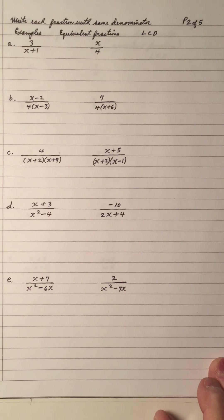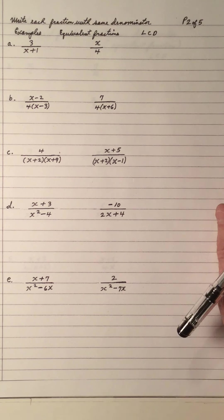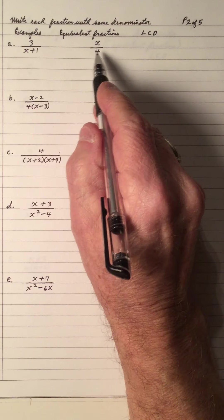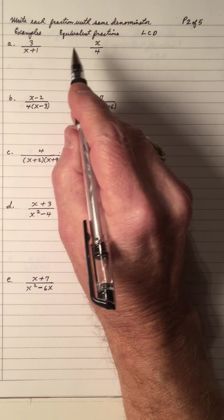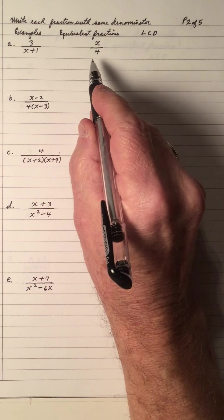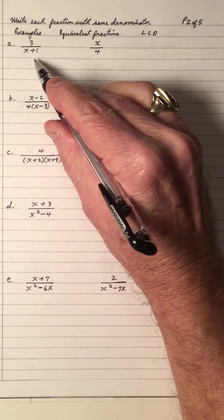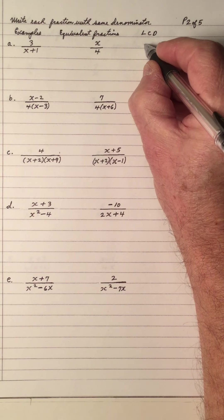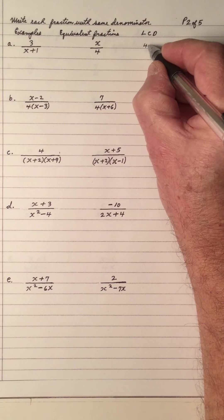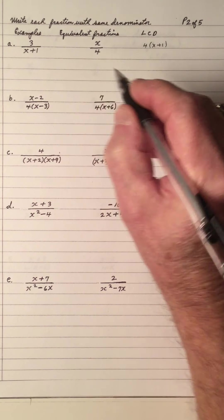Write each fraction with the same denominator. To do that, if I need the same denominator for both fractions to have equivalent fractions, I have to find the LCD. The LCD is x plus 1 and 4, so the LCD is 4 times x plus 1, because you need each of these.